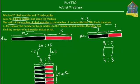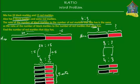Just like with Mia's marbles, if we take Alex's 8 black marbles and his red marbles, we should be able to arrange them into sets of 4 black marbles for every 3 red marbles. If we make a set of 4 black and 3 red, how many sets can we fit 8 black marbles into? We need just 2 sets, because each set has 4 black marbles and 4 plus 4 is 8. So there are 2 sets of 4 black marbles and 3 red marbles.